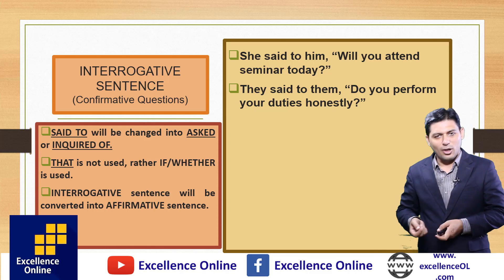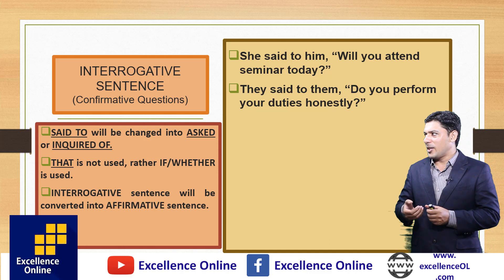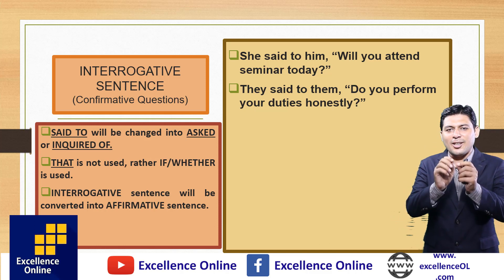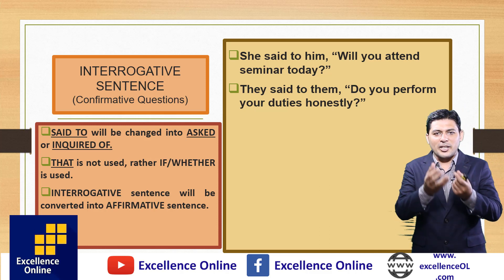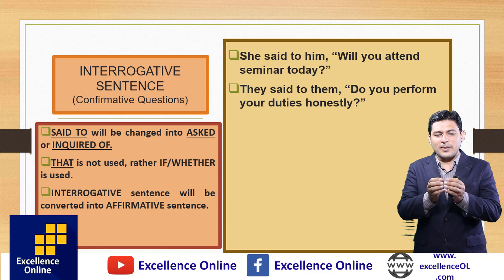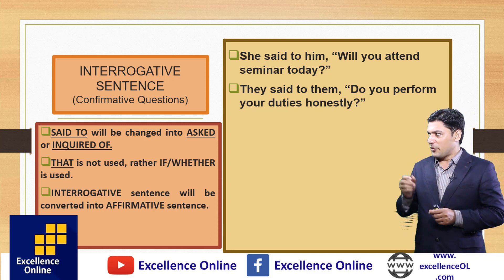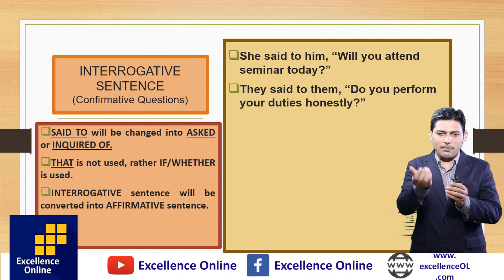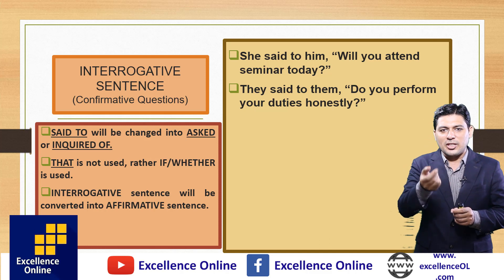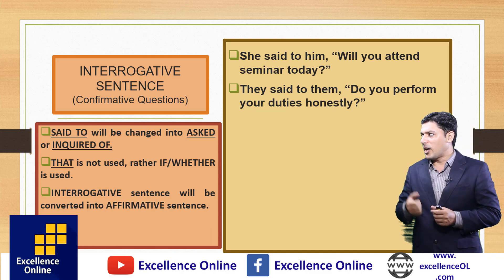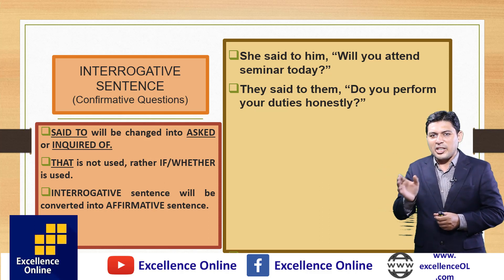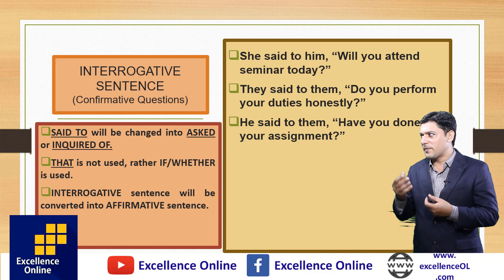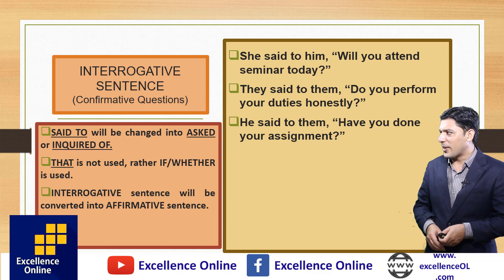Next example: 'They said to them, do you perform your duties honestly?' It starts from 'do,' a helping verb, so it is a confirmative question. 'They said to them' becomes 'they asked them.' For joining two clauses, we use 'if' or 'whether.' 'You' changes according to the object 'them,' so 'they asked them if they performed their duties honestly.' That is the right answer.